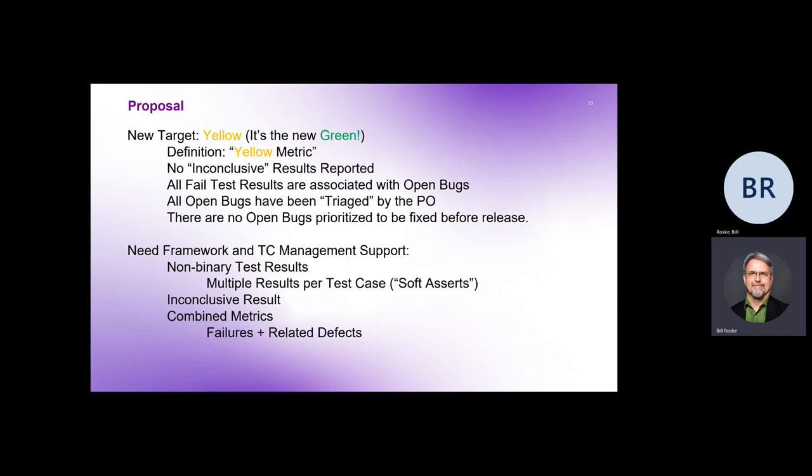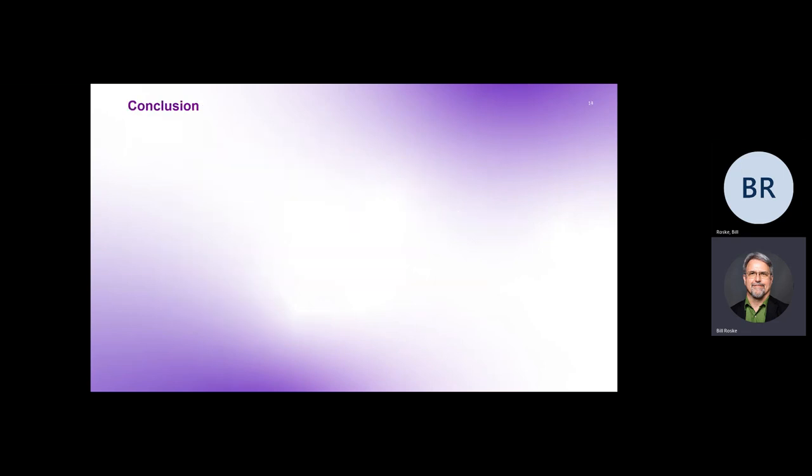We need the ability to combine the metrics, not only the failures, but also any related defects. So we need to know what constitutes a real failure. If it's a failure, but there's an open defect and the target release is a later release. Great. That tells us this is no longer red. It's yellow, right? That contributes to that yellow. It's known. It's a prioritized bug. We can go with yellow.